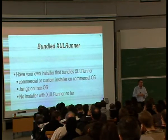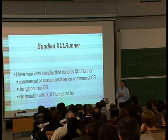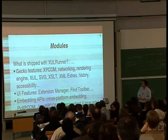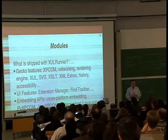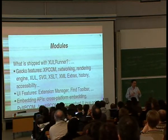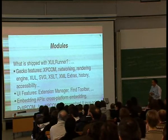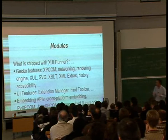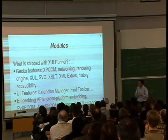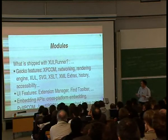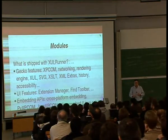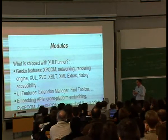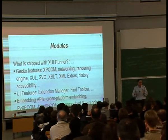Has anybody heard of the Songbird media player? It bundles its own XULRunner at the moment. What modules does XULRunner include? It ships with most standard Gecko features: XPCOM, networking, rendering engine, XUL, SVG, XSLT, XML extras, history, accessibility. You also get some UI features: the extension manager, find toolbar, etc. Obviously you might not need all of these, but some you might. It also has embedding APIs: cross-platform embedding, PYXPCOM, JavaXPCOM — though some integrations are still being worked on.